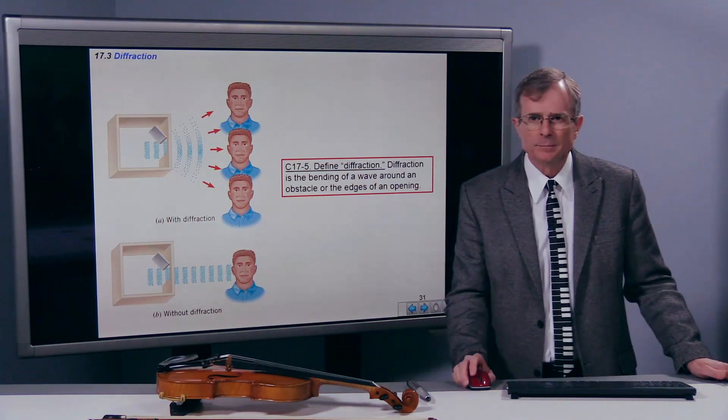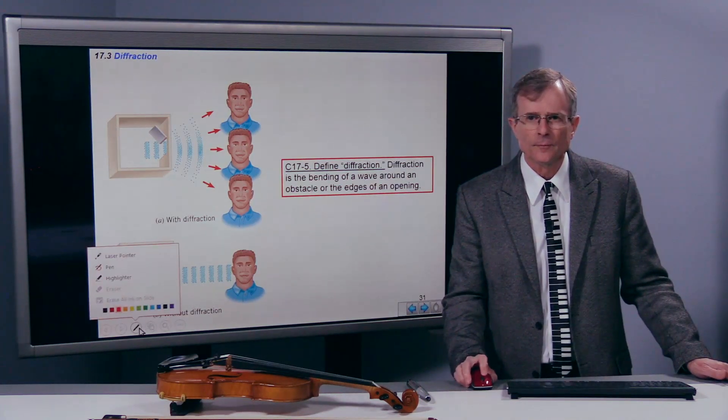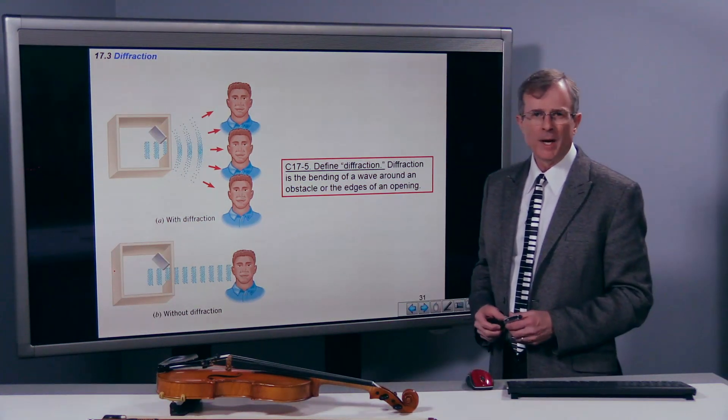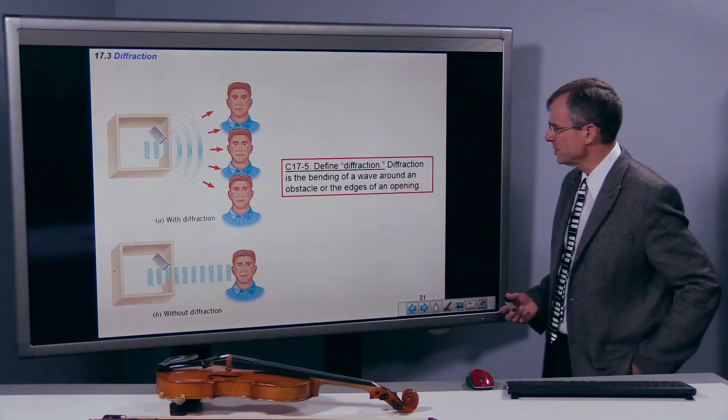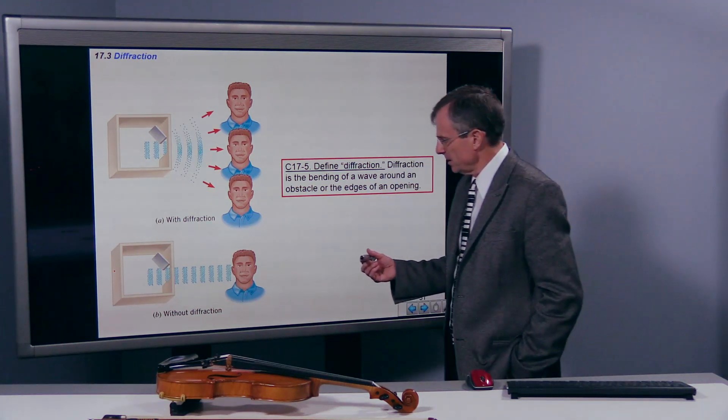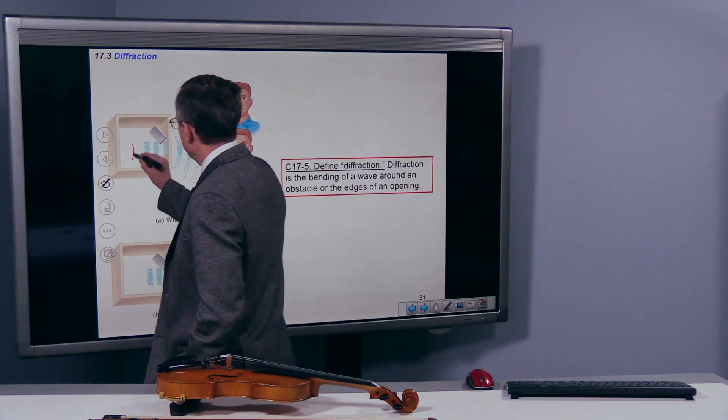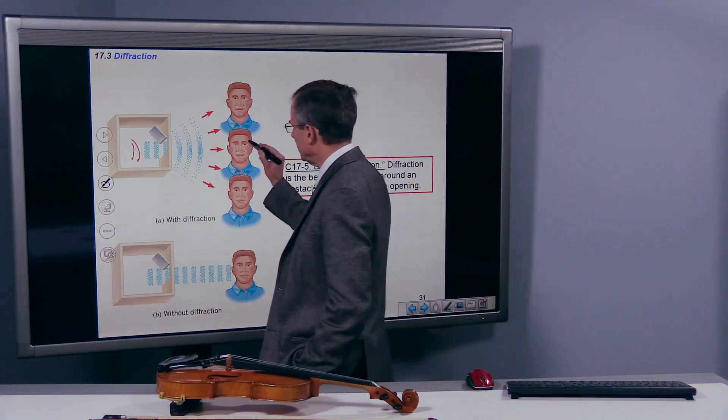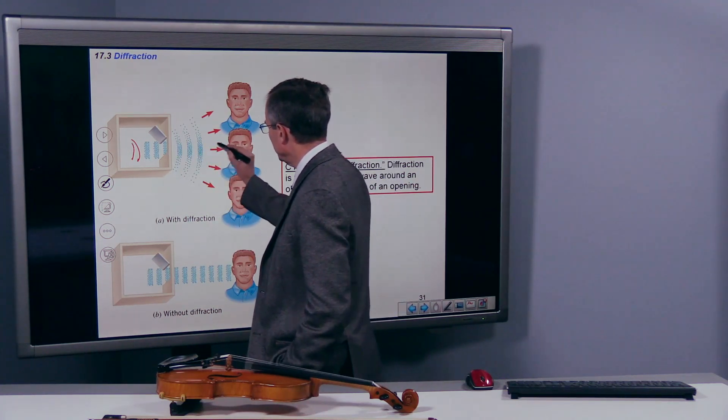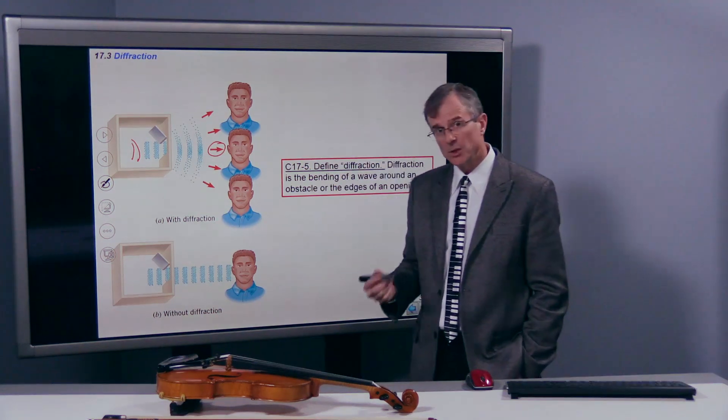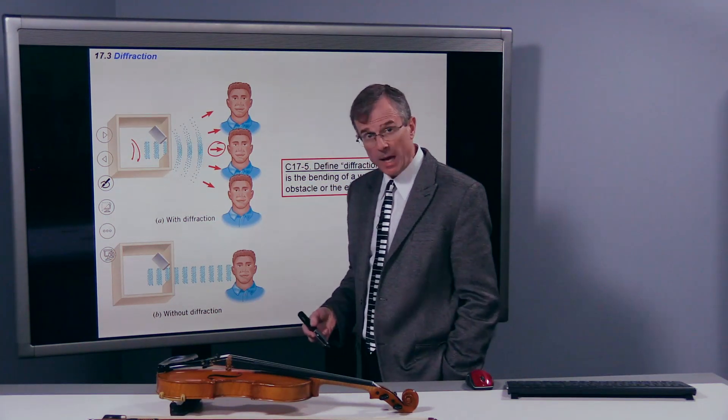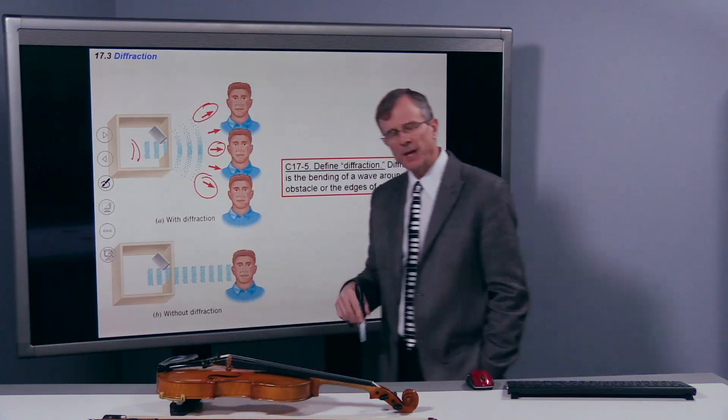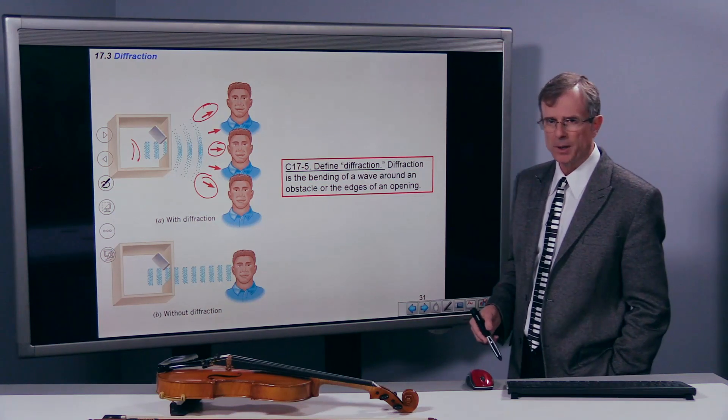And it is defined as the bending of a wave around an obstacle or the edges of an opening. So if you think about sound being generated here and going through this doorway, you can definitely hear the sound if you're directly in front of the doorway. But you can also hear the sound, though not as loud, off to the side.